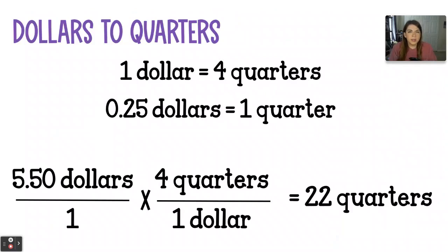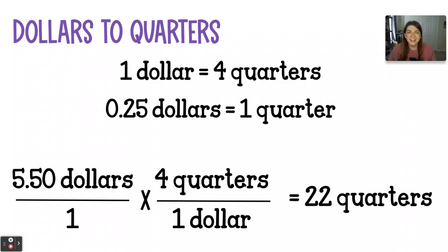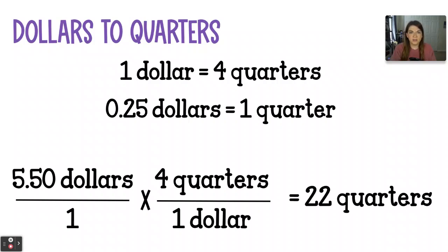What's happening here is that you're doing a unit conversion — you are converting dollars into quarters. Five and a half dollars, really. So what you would do is remember the conversion factor that $1 is equal to four quarters. So if we're starting with $5.50 and we multiply that by the four quarters it takes to make a dollar, we wind up with 22 quarters being equivalent to five and a half dollars.